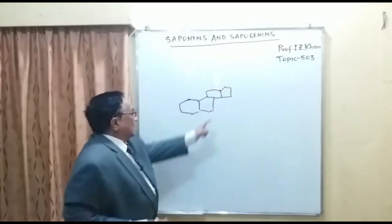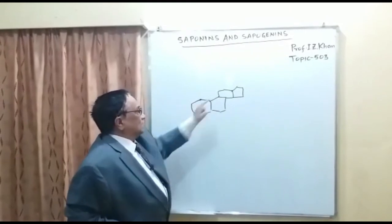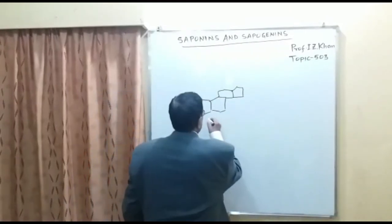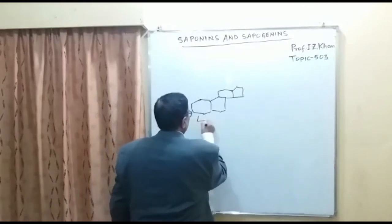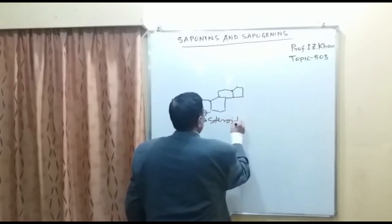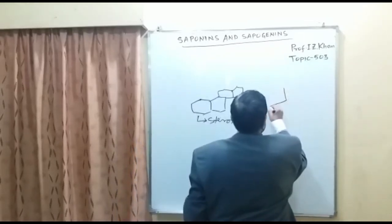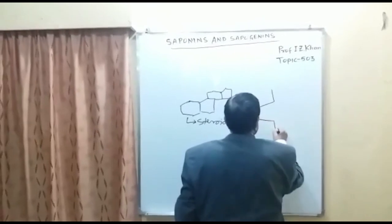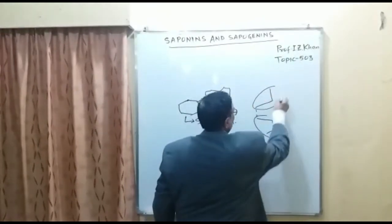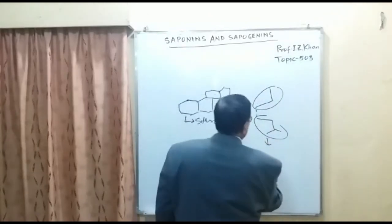The cyclopentanophenanthrene nucleus is the carbon skeleton for steroidal saponins. For terpenoidal saponins, the isoprene unit joins in the form of a long tail and you get a different type of nucleus with five rings.